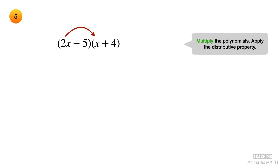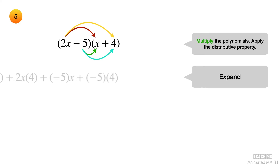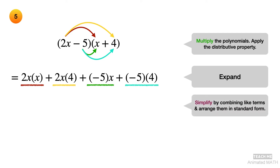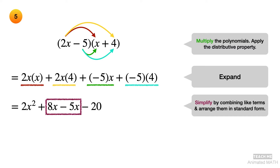Apply the distributive property when you multiply the polynomials. Expand the product — each colored arrow is matched with an underline of the same color. Simplify the polynomial product by combining like terms and arrange in standard form. The final answer is 2x squared plus 3x minus 20.